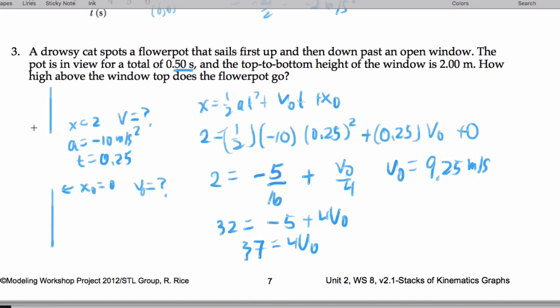Now let's get the height that we end up above the window. To get the total height we travel above the window, or just the total height from the bottom of the window, we can say v squared is v naught squared plus 2gh. So we end up getting 0 is 9.25 squared, 2 times g. That's negative 20 times h.